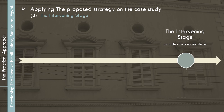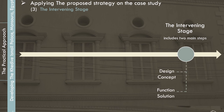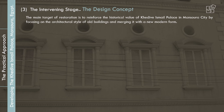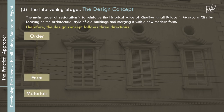The intervening stage includes two main steps: the design concept and the function solution. The main target of restoration is to reinforce the historical value of Khadiva Ismail Palace in Mansoura City by focusing on the architectural style of old buildings and merging it with a new modern form. Therefore, the design concept follows three directions: order, form, and materials.